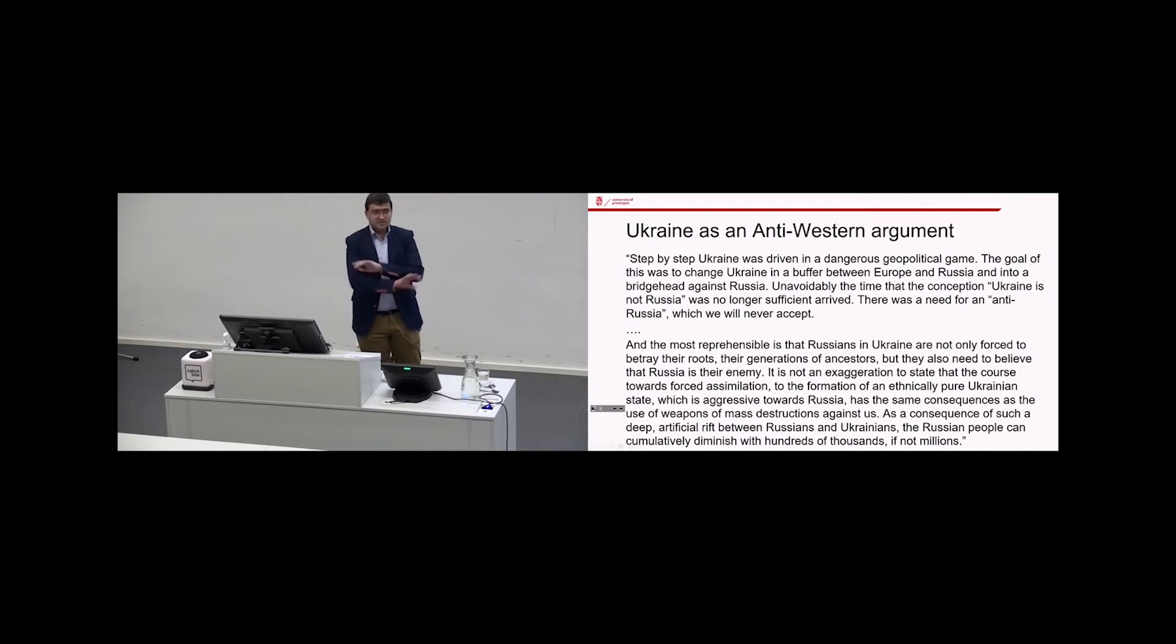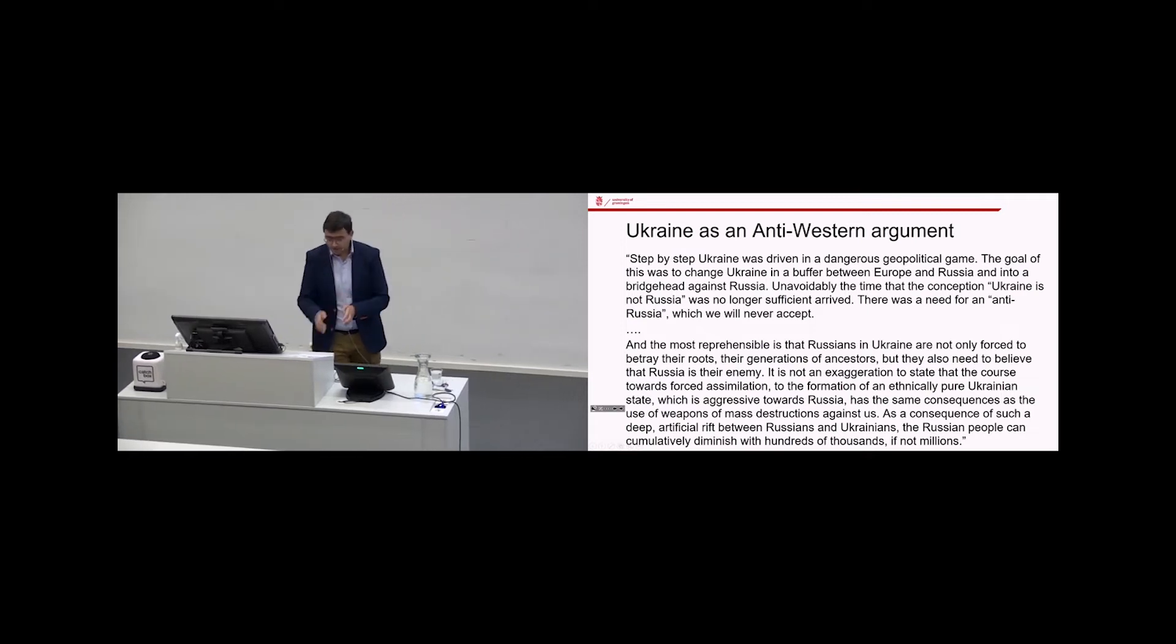So when Putin says Ukraine is not a nation, Ukraine doesn't exist, it's a 19th century tradition, it stands in a much older tradition. And here also that in the 19th century it were the Poles who were using Ukraine as a way to undermine Russia. In last year in his article Putin expressed exactly the same argument. Step by step Ukraine was driven in a dangerous geopolitical game, the goal of this was to change Ukraine in a buffer between Europe and Russia and into a bridgehead against Russia.